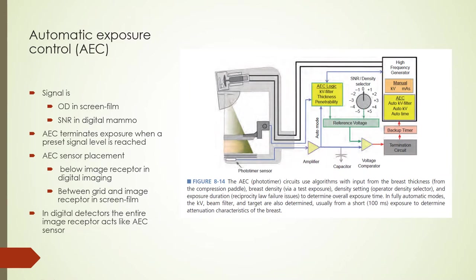Control of mammography exposures can be done in several ways—manually or with an automatic exposure compensation system called AEC. For digital systems, the user sets a signal-to-noise ratio level; when the imaging system is activated, the AEC terminates exposure when the preset signal level is reached. AEC in mammography has similar features to general radiography—both systems have photosensors and density control stages. One difference is that the AEC sensor in mammography is placed below the image receptor to avoid sensor artifacts in the image.